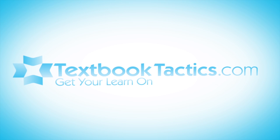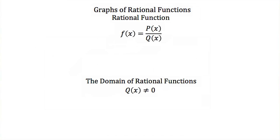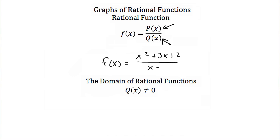This is a tutorial on the graphs of rational functions. A rational function is a function that we can divide into two functions, one in the numerator and one in the denominator. An example of a rational function would be f(x) = (x² + 3x + 2) / (x - 7).